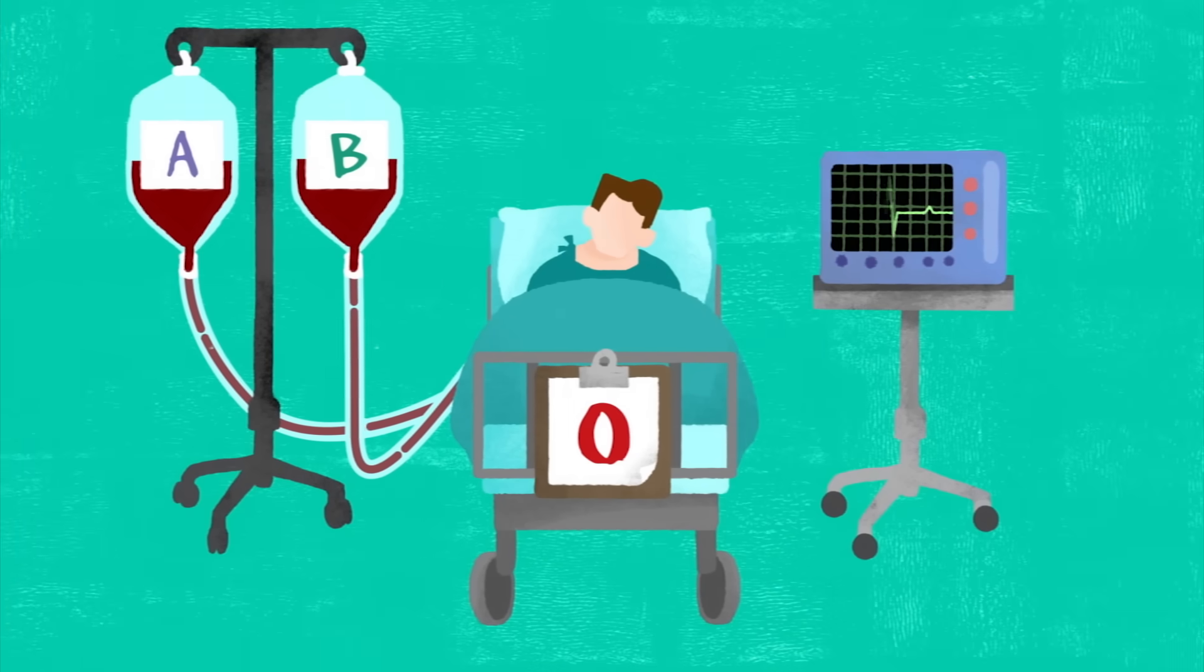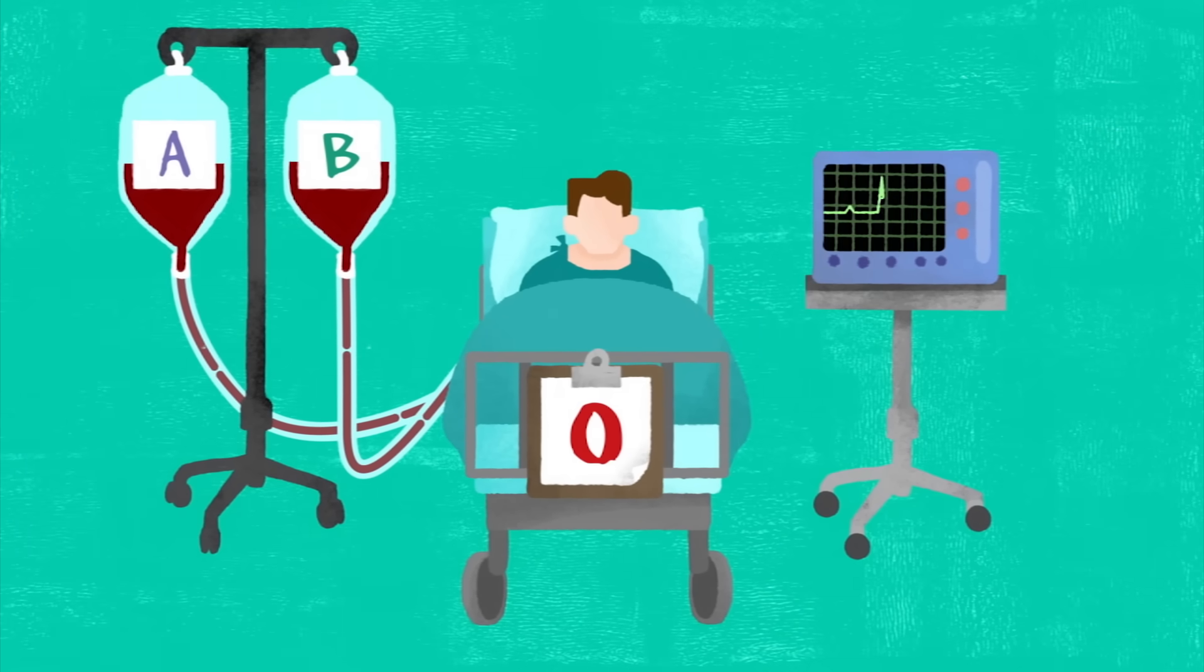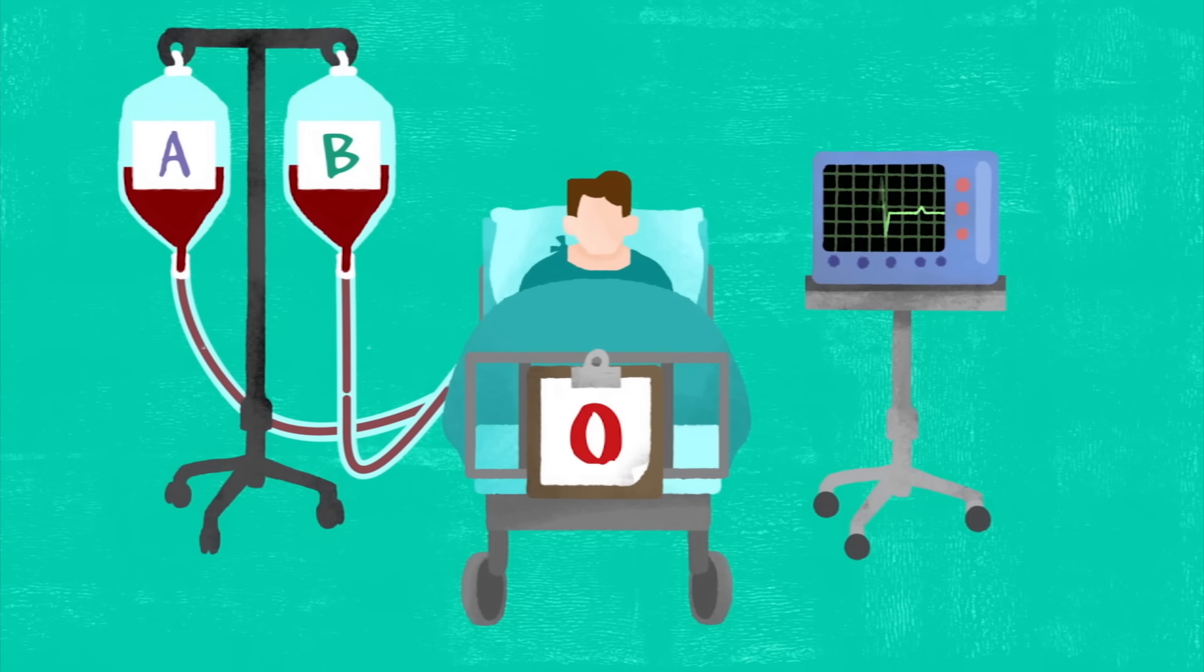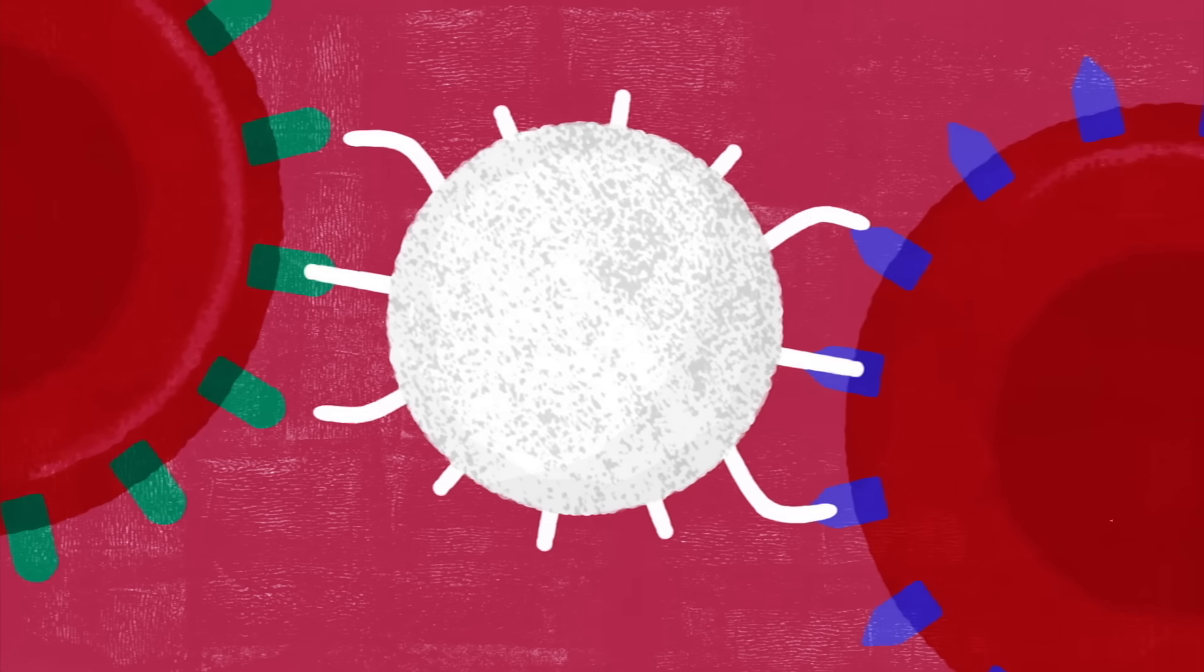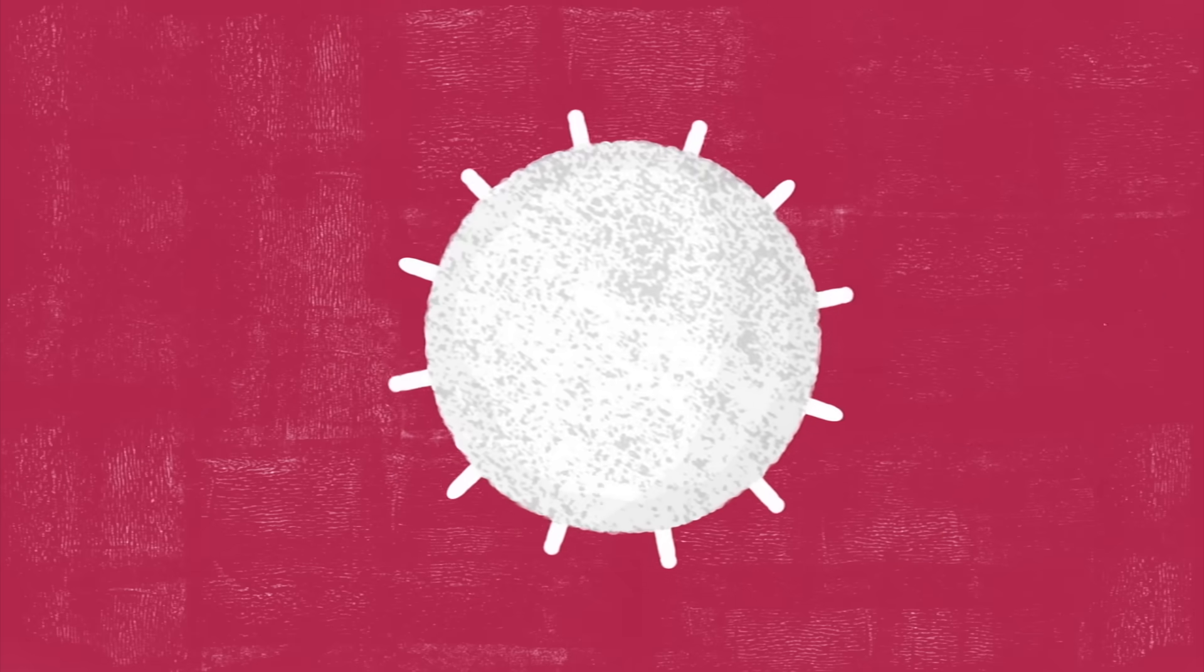On the other hand, people with blood type O do not produce either antigen, which makes them universal donors, but will cause their immune system to make antibodies that reject any other blood type.